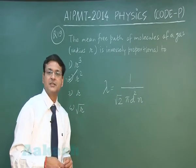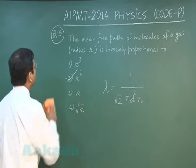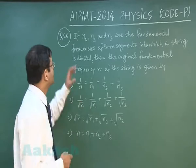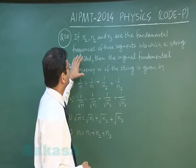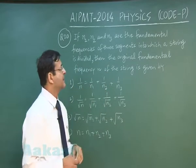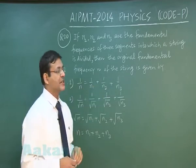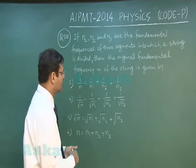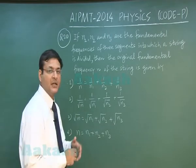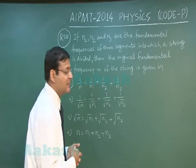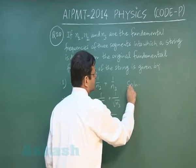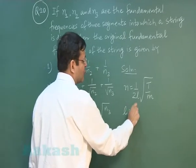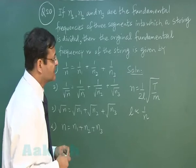In question 20, if n1, n2, and n3 are the fundamental frequencies of 3 segments into which a string is divided, the original fundamental frequency n of the string is given by what? This is a sonometer wire question — a type frequently asked every 2-3 years. Using the fundamental frequency formula n = 1/(2l) · √(T/m), length is directly proportional to 1/frequency.